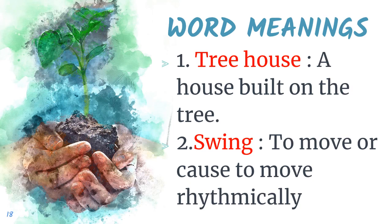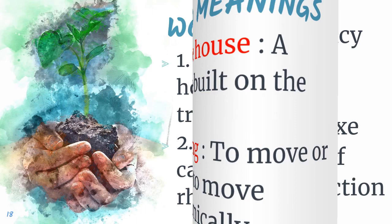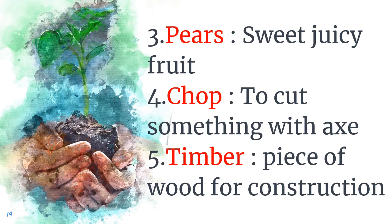The second word is swing. Its meaning is to move or cause to move rhythmically, or we can say in rhythm. The third word is pears — meaning sweet juicy fruit. The fourth word is chop. Chop means to cut something with an axe. An axe is a tool for cutting trees. The fifth word is timber. Timber means a piece of wood for construction.